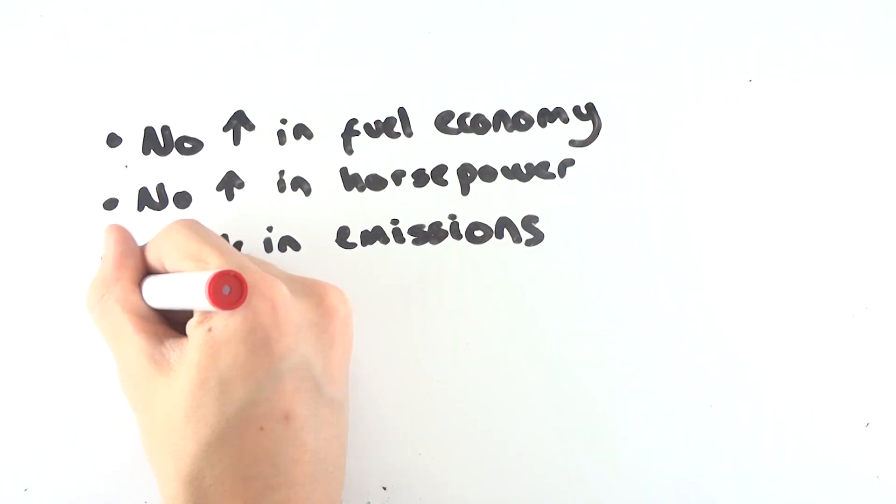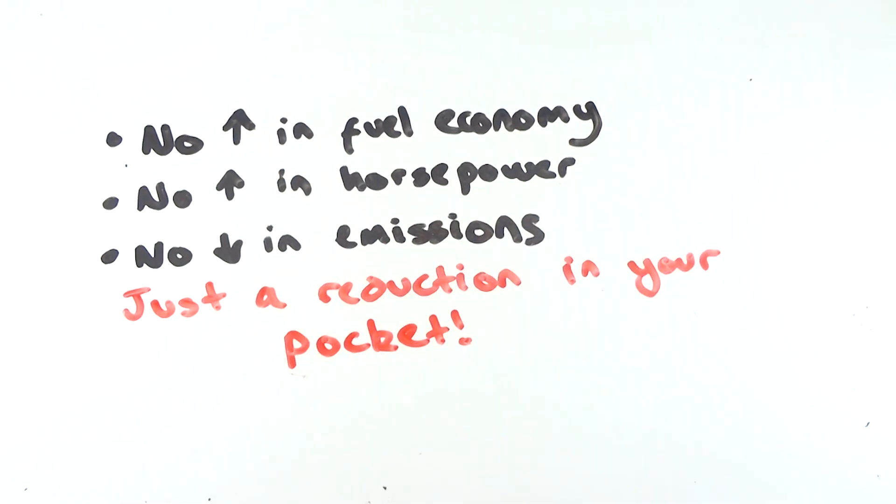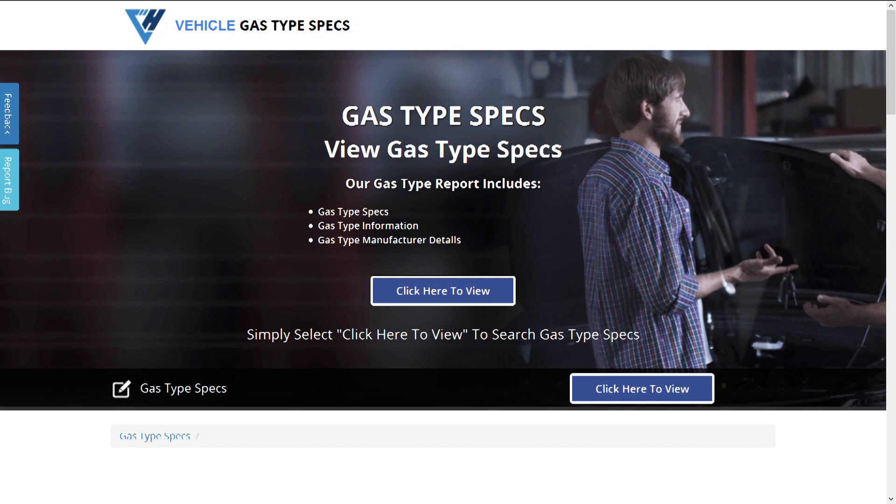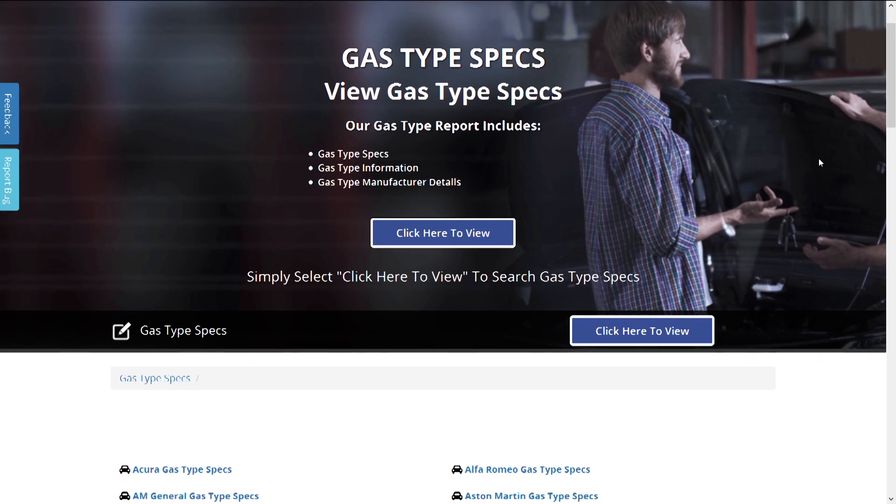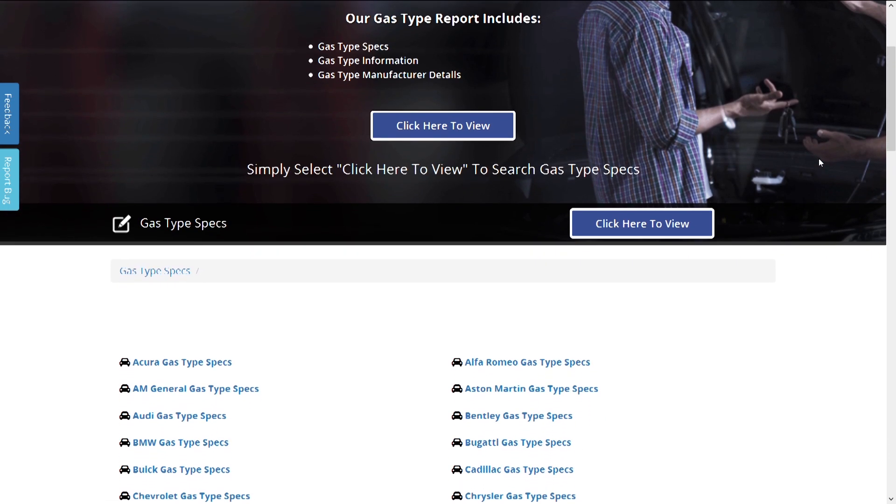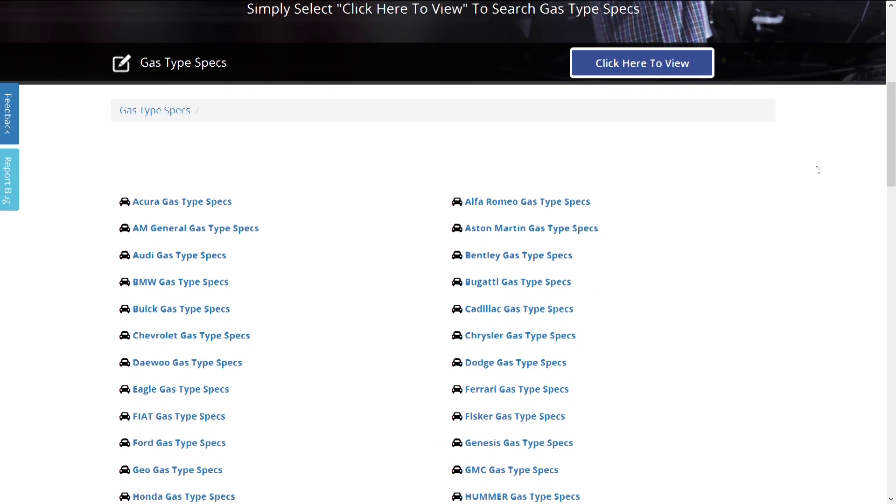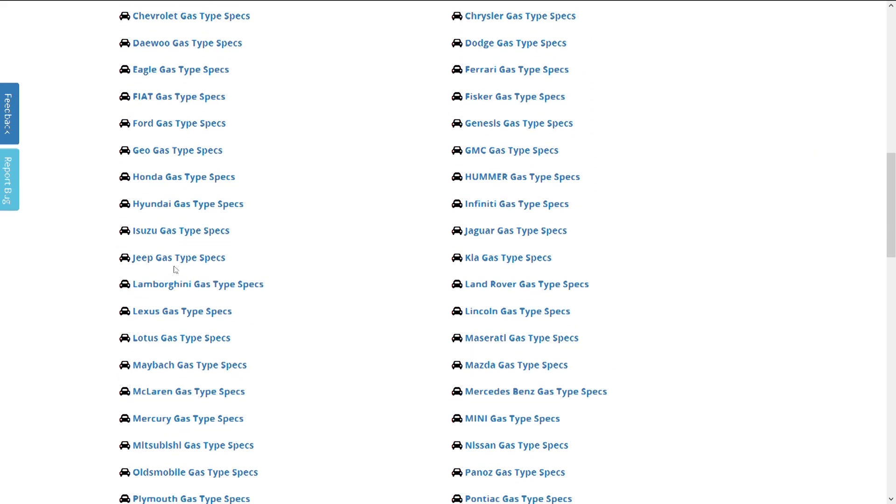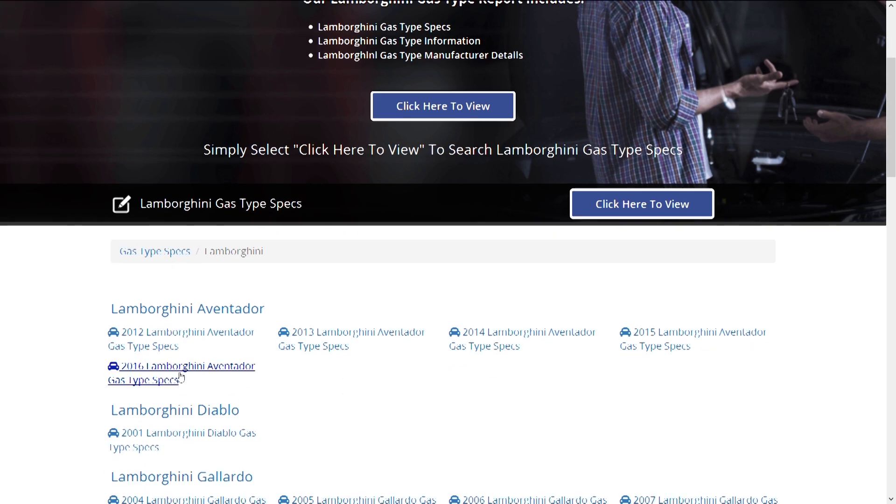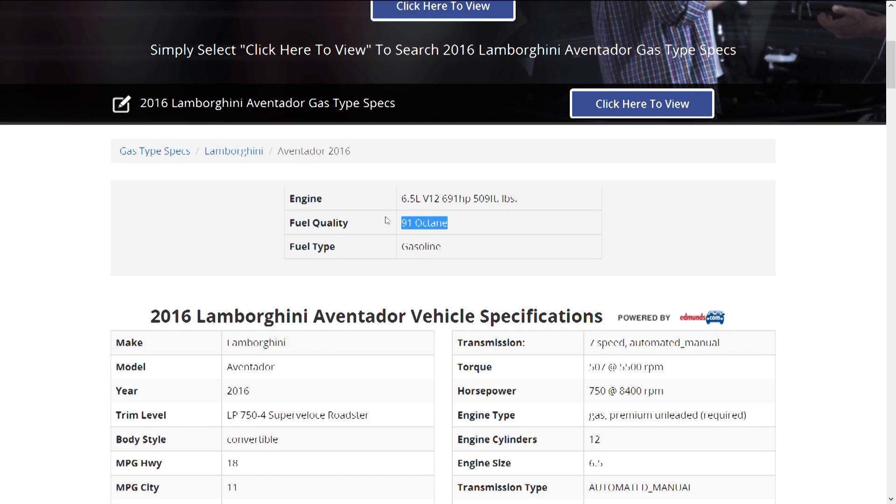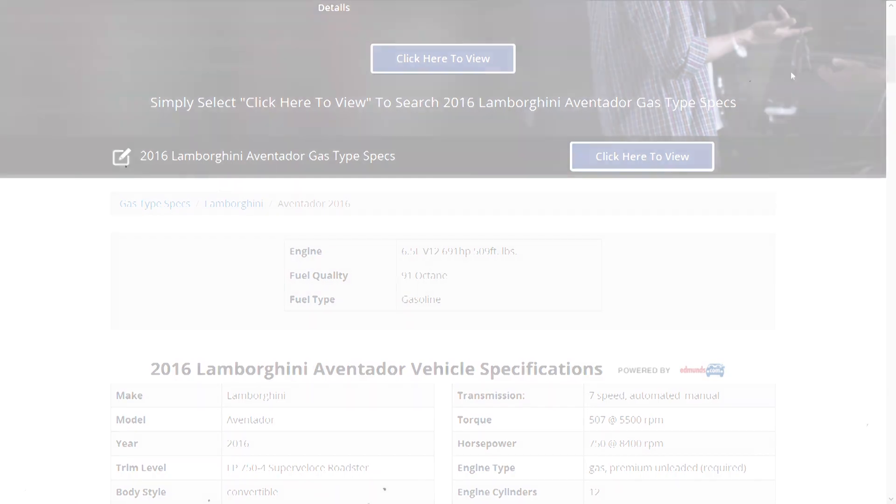You get no increase in fuel economy, horsepower or a reduction in emissions, just a reduction in your pocket. So what it comes down to is that it is a good idea to get your car handbook out or research on the internet what level of octane your engine needs so you don't help contribute to the billions of dollars being wasted each year. You could end up voiding your warranty by picking the wrong fuel at the pump, which isn't much fun for anyone. Thanks for watching and be sure to subscribe.